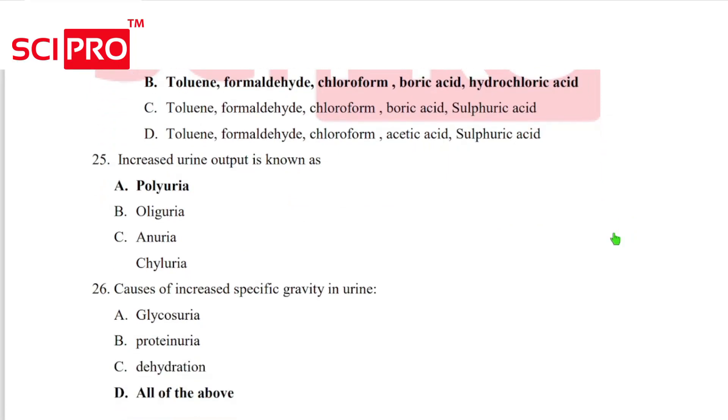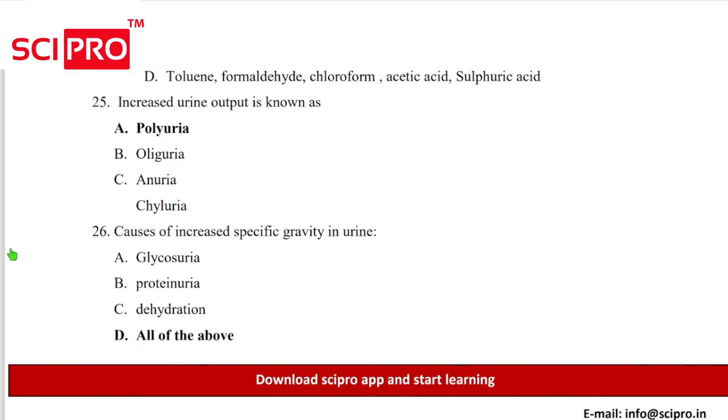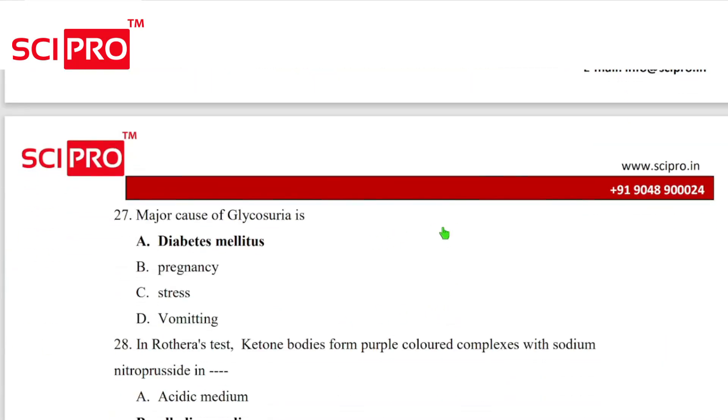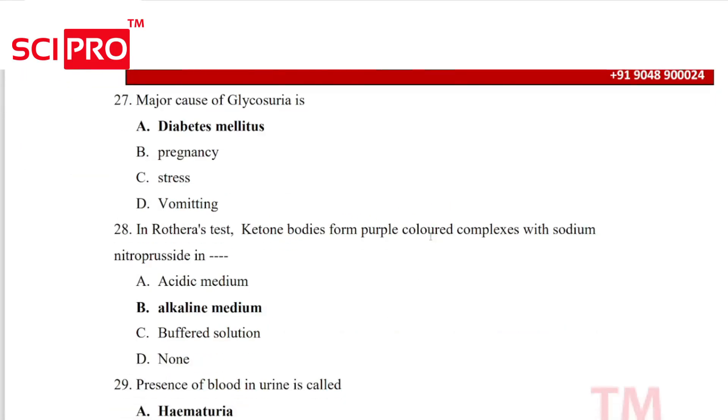Question 25, the increased urine output is known as polyuria. Question number 26, causes of increased specific gravity in urinary. Answer is all of the above. Question 27, major cause of glycosuria is diabetes mellitus.